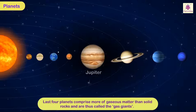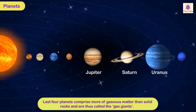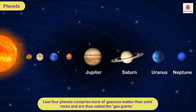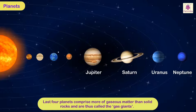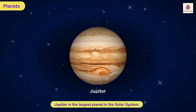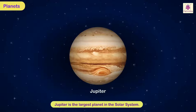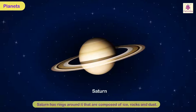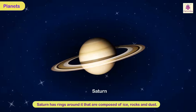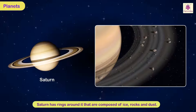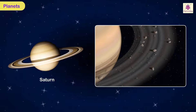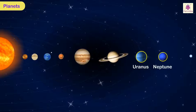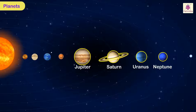The next four planets — Jupiter, Saturn, Uranus, and Neptune — comprise more gaseous matter than solid rocks and are called the gas giants. Jupiter is the largest planet in the solar system. Saturn is the second largest planet after Jupiter and has rings around it composed of ice, rocks, and dust. Some of Saturn's rings can be seen from the Earth through a telescope. Uranus and Neptune are much smaller than the other two gas giants.